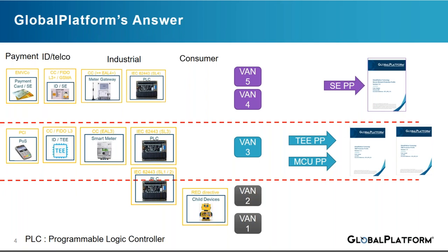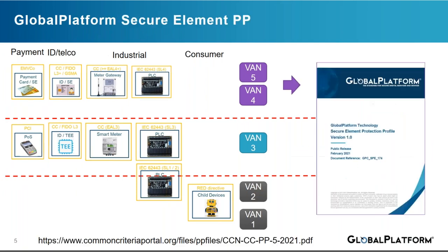Within Global Platform we have 3 levels. We have been publishing and working on the TEE protection profile for a while, and what I will present today is what we have created for the Secure Element, which is a high level of security, to answer markets such as payment, ID, or high-level secure monitoring within the industrial world. The Secure Element Protection Profile is really new. We didn't have a way to define the different assets that need to be protected, nor the security features that are the core of Global Platform technology. This has been released at the beginning of the year, certified within the Common Criteria scheme, and I will present its main structure today.